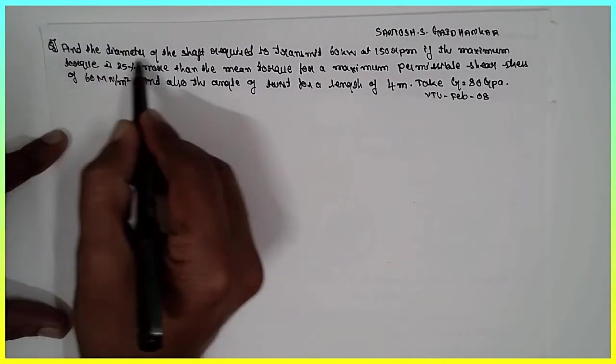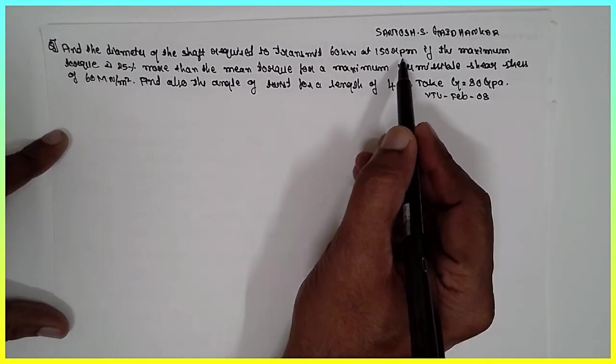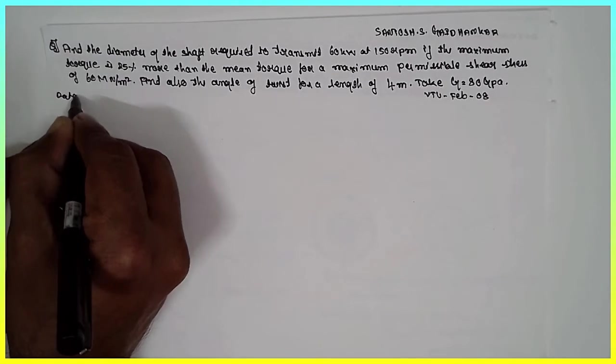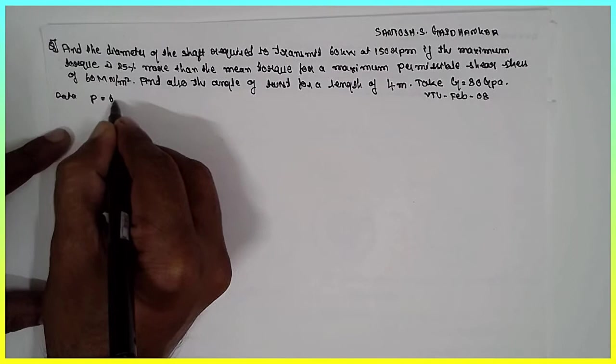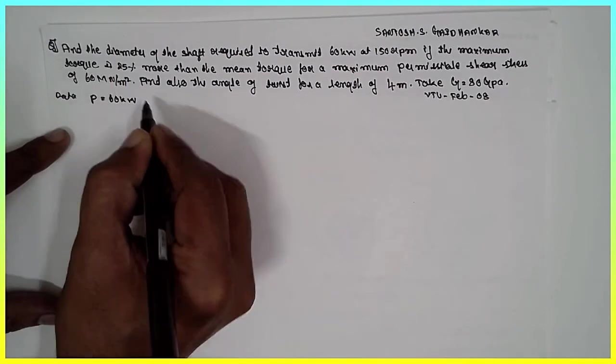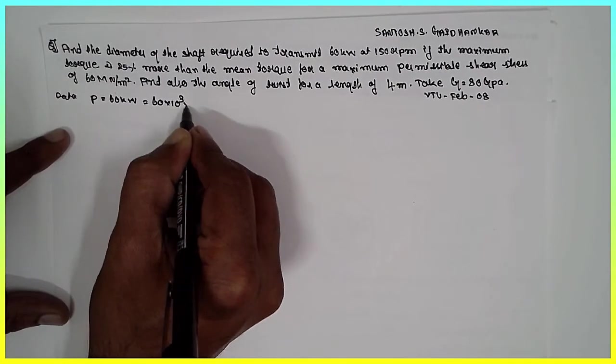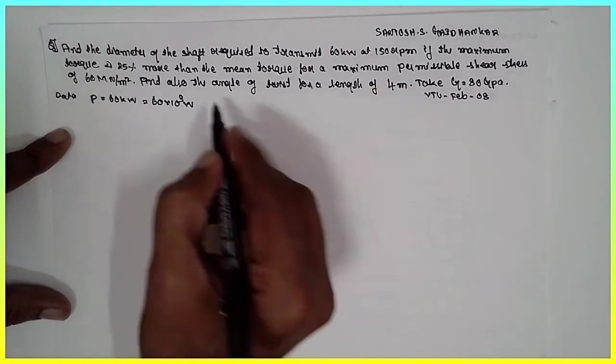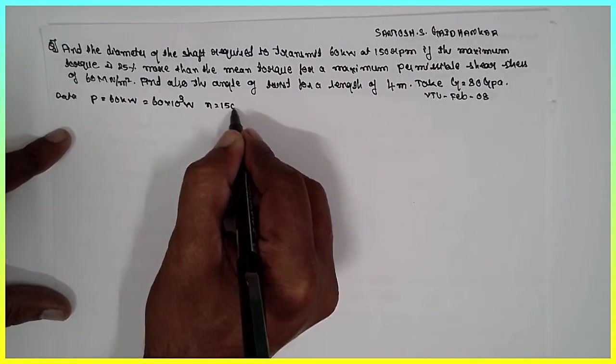Find the diameter of shaft required to transmit 60 kilowatts at 150 rpm. Data is given here. Power is given, P equals 60 kilowatts, 60 times 10 raised to 3 watts. We have done the conversion. At 150 rpm, small n they have given it, 150 rpm.